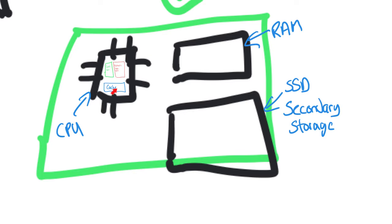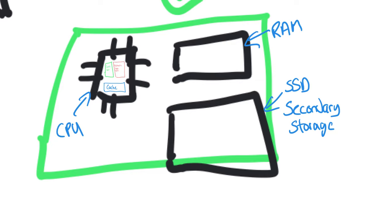RAM is something known as volatile storage — that means as soon as you turn the power off, all the data disappears. Whereas secondary storage is what's called non-volatile, so if you save your work there, it will be saved until the device fails — it keeps it forever within reasonable parameters. With RAM, if you've got your work in Word and you haven't saved it and somebody turns your computer off, the currently active data will be kept in RAM and then RAM will vanish, and you've lost all your data.